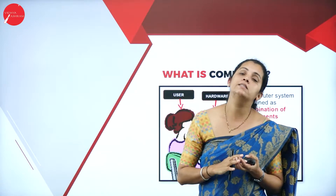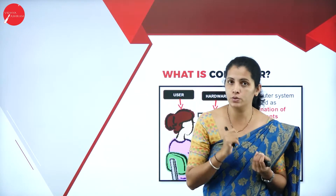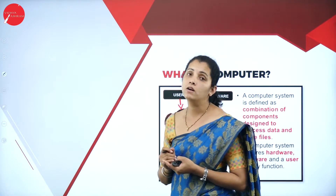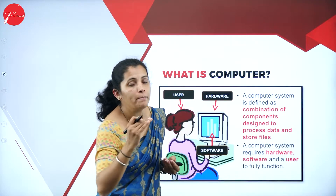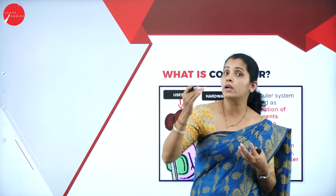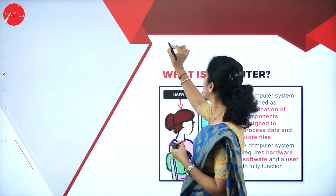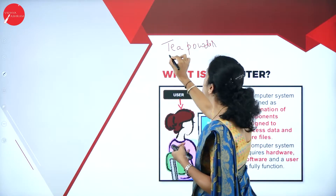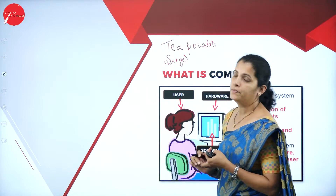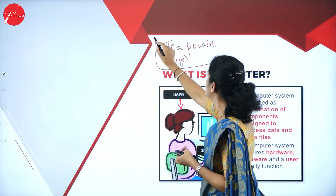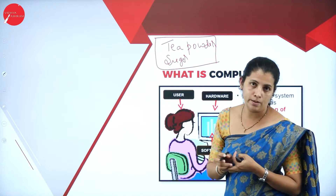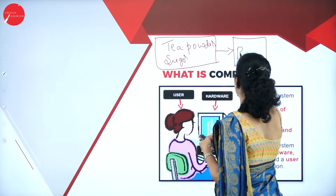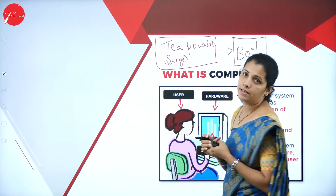Consider this familiar example: I want to prepare one cup of tea. To prepare one cup of tea, what ingredients do I require? I require tea powder, sugar, water, and milk. I am going to consider these ingredients as my input.